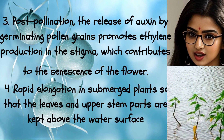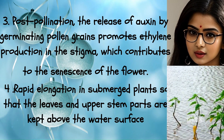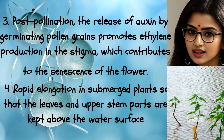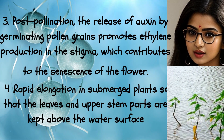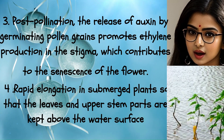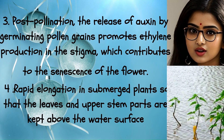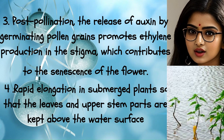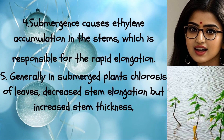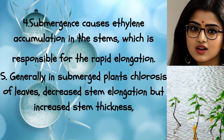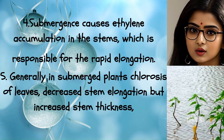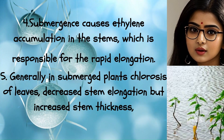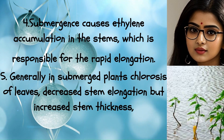Rapid Elongation in Submerged Plants: Ethylene promotes rapid elongation so that the leaves and upper stem parts are kept above the water surface. Submergence causes ethylene accumulation in the stems, which is responsible for this rapid elongation.